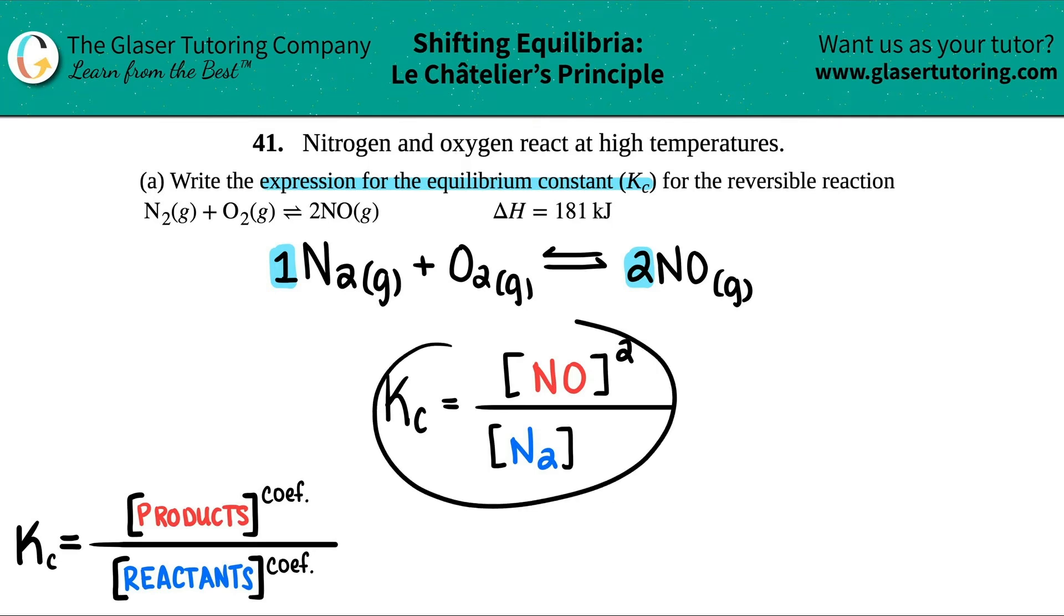And then remember, when you're doing the Kc formula, your two reactants will be timesed by each other, not added. So I can just put the next bracket here. O2. Close the bracket. And the same thing goes here.